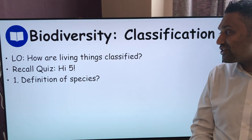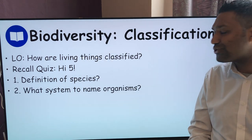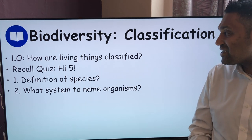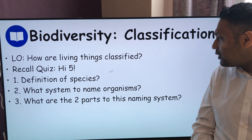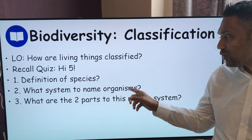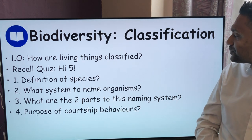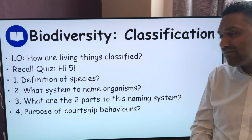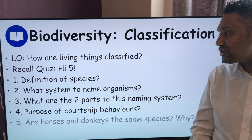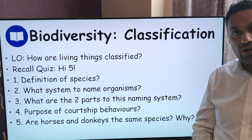Number one: what is the definition of species? Number two: what system do we use to name organisms — what is the name of that system we use to name our different species? Number three: what are the two parts of this naming system? Number four: what is the purpose of courtship behaviours? And question five: are horses and donkeys the same species, and why?